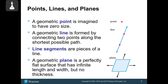Line segments are pieces of a line, meaning they have a specific start and an end. So if this was point A and this was point B, if I drew it extending in both directions, AB would be a line. If I drew AB with endpoints, it would be called a segment.